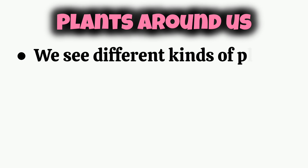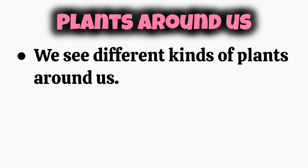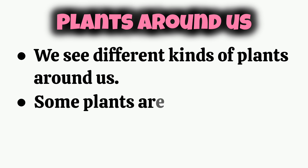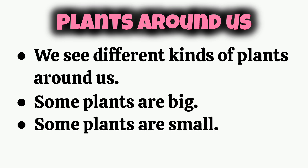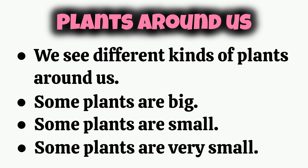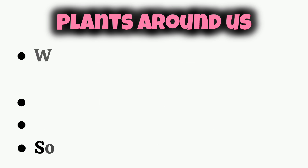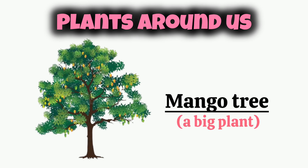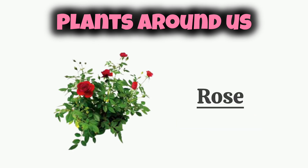Plants are all around us. We see different kinds of plants — some plants are big, some plants are small, and some plants are very small. For example, a mango tree is a big plant, and a rose is a small plant.